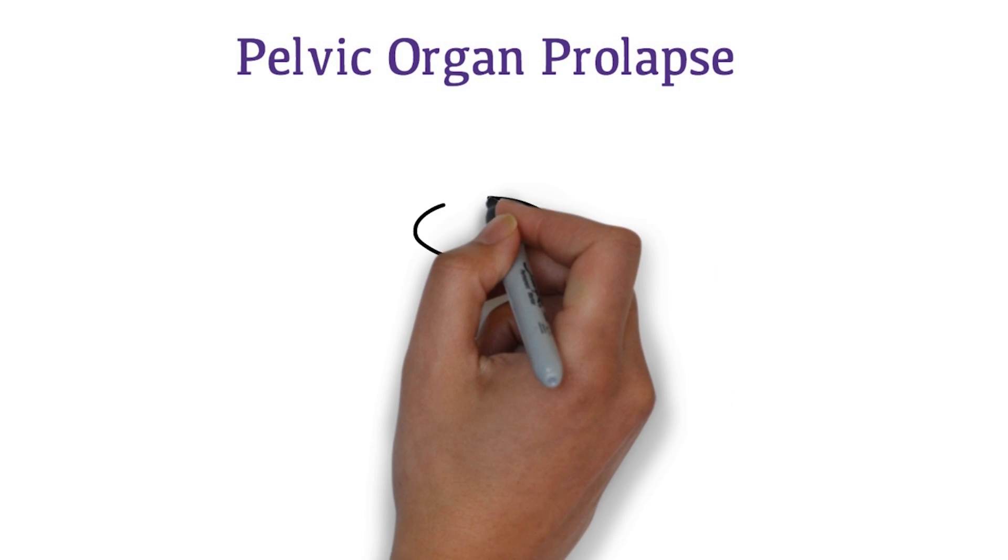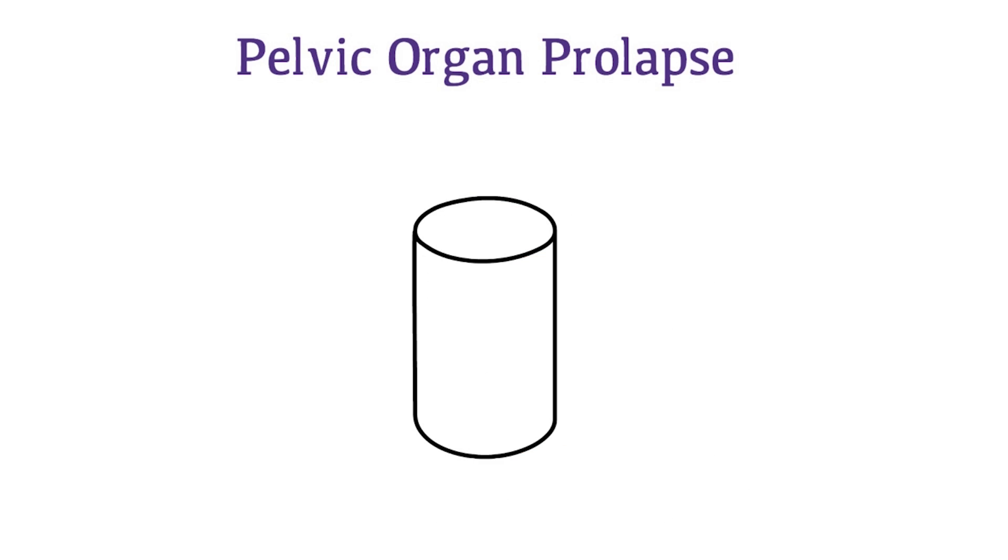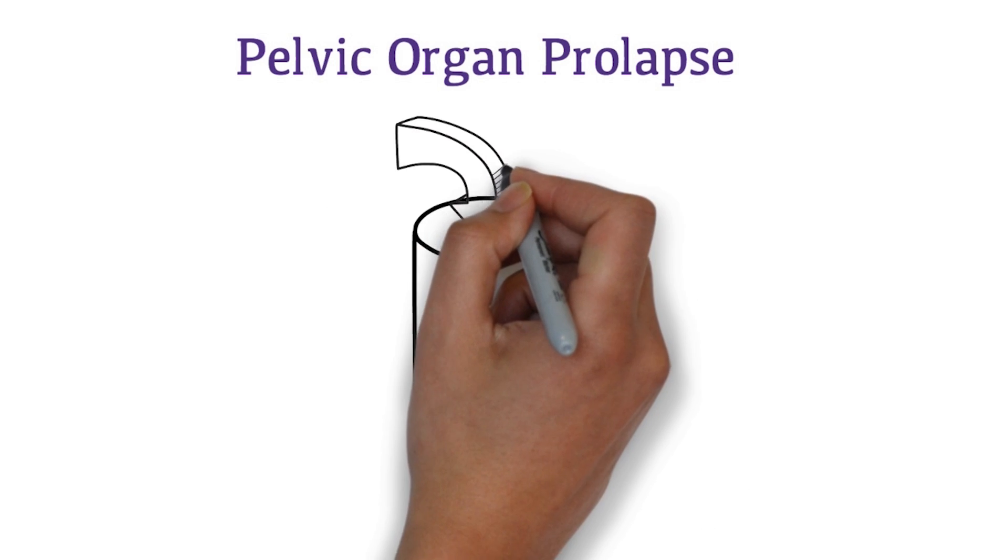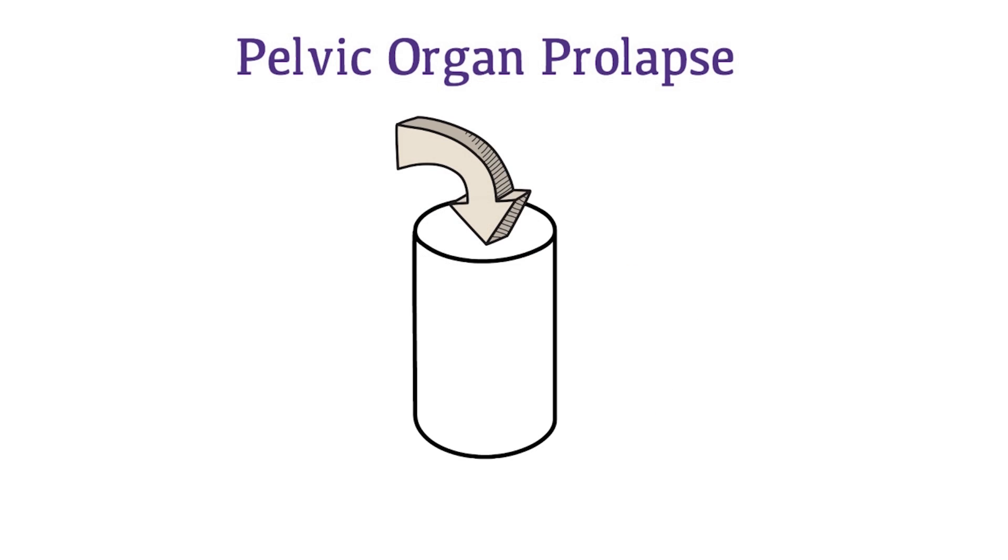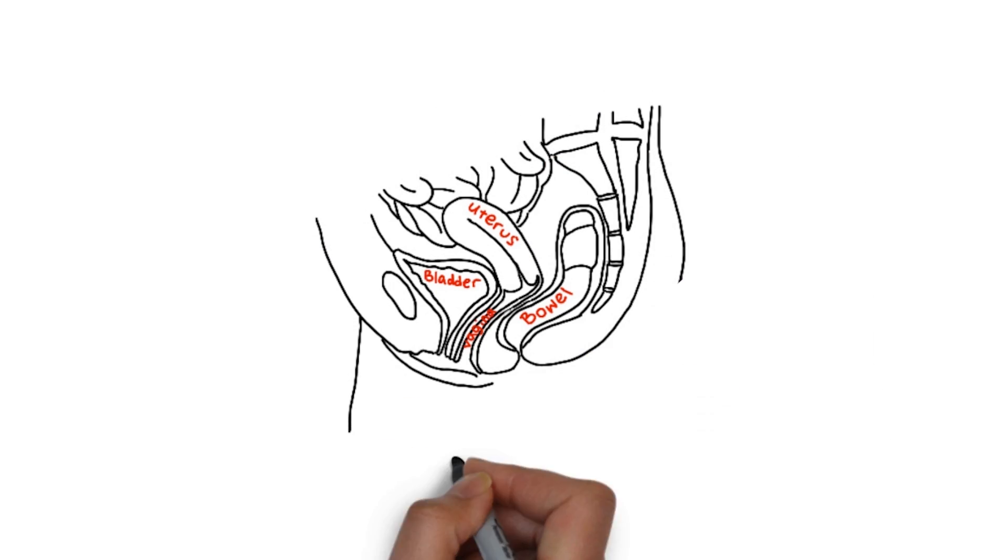What is Pelvic Organ Prolapse? Great question! Prolapse is the herniation of one or more pelvic organs into the vagina or out of the vagina. Pelvic organs include bladder, uterus, vagina, and bowels. It occurs because of poor support of pelvic organs.